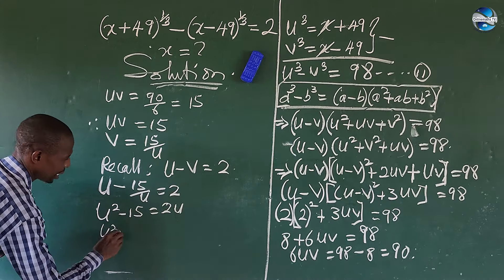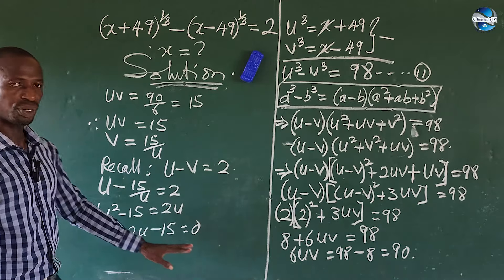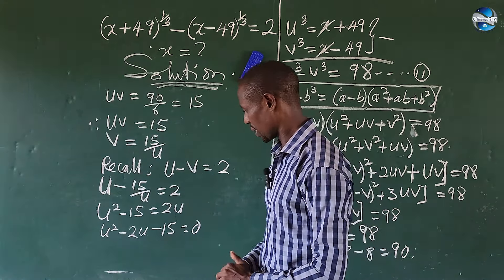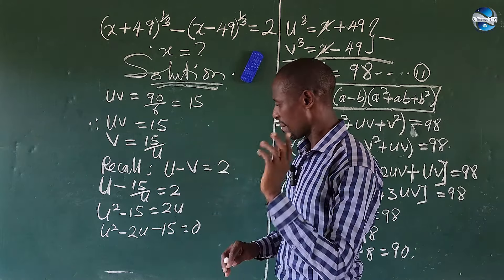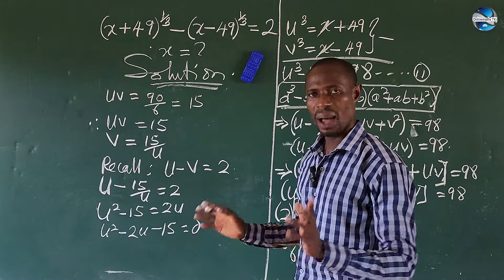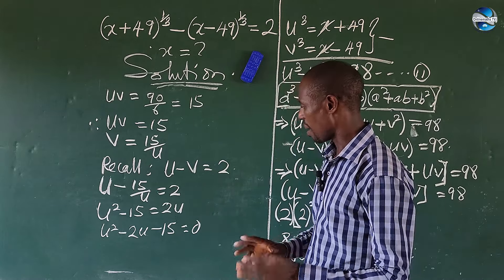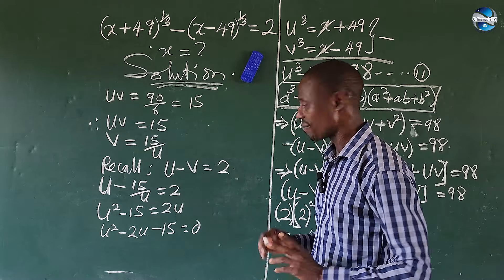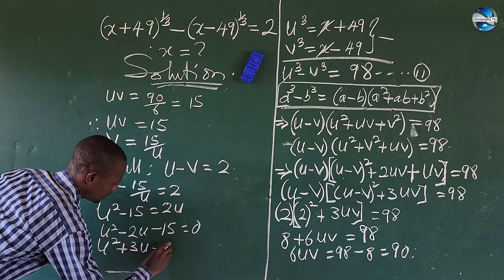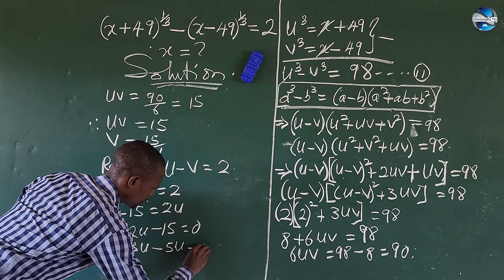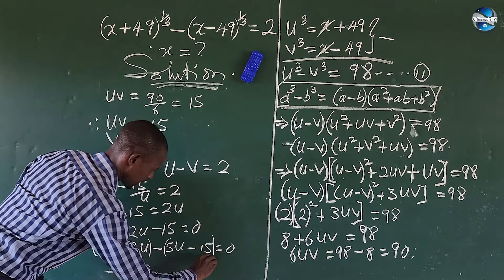Multiplying through: u² − 15 = 2u, so u² − 2u − 15 = 0. This is a quadratic equation. We find factors of 15 that satisfy it. The factors +3 and −5 work: u² + 3u − 5u − 15 = 0.